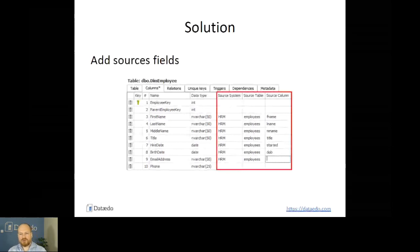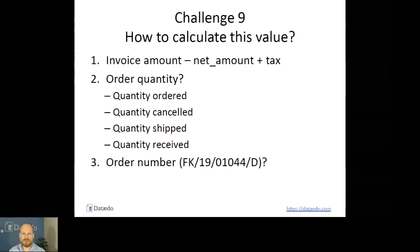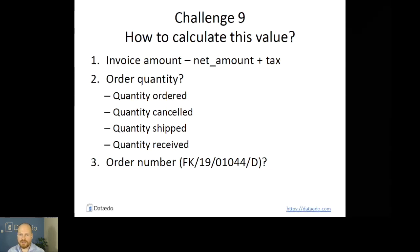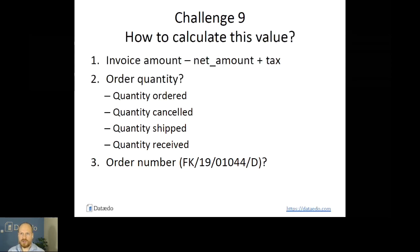Challenge number nine: how to calculate this value? Most data is stored in tables, but some of it is derivative — you need to do calculations or string concatenation to get certain values, and it's not obvious. First example: invoice amount — you get it by adding net amount and tax. That's quite obvious, assuming somebody knows that net amount isn't the invoice amount. But imagine an ordering system with many different fields like quantity ordered, canceled, shipped, received, and so on. How do you know what was actually purchased by the customer or delivered? That could be tricky or quite often impossible to reverse-engineer.